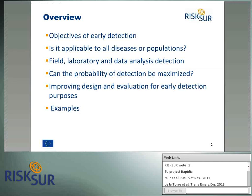The presentation is structured as follows. We will first briefly review the objectives of early detection, then explore when early detection is best applied — if it is applicable to all diseases or all populations. We will look at the characteristics that make early detection particularly suitable for certain diseases and health situations, review the basic elements of surveillance for early detection, and what delays the detection of exotic, new or emerging diseases. The presentation finishes with suggestions to improve early detection design and evaluation based on current examples.